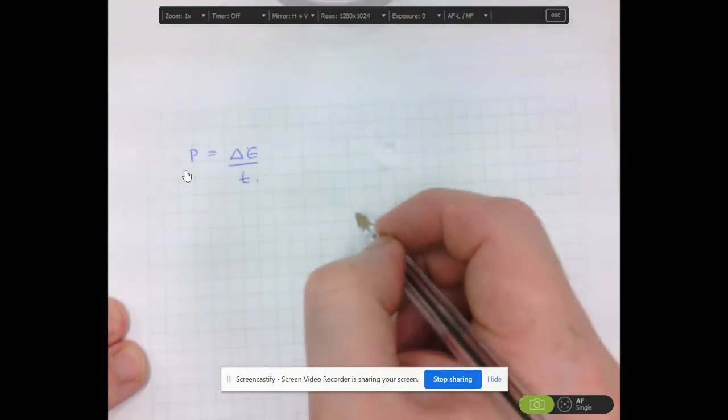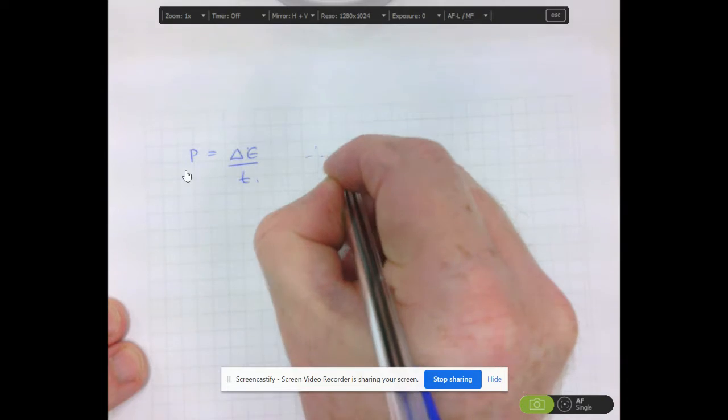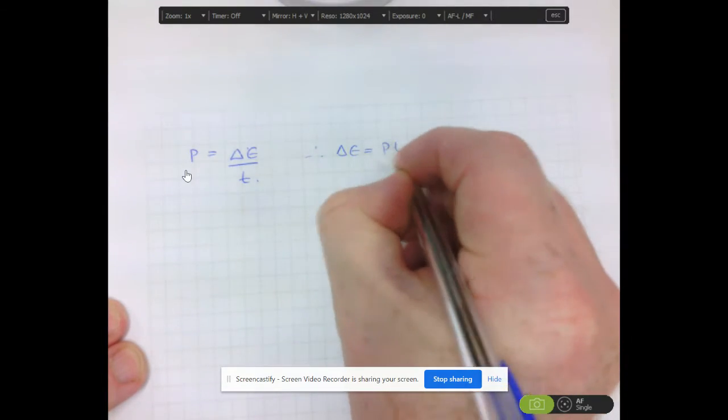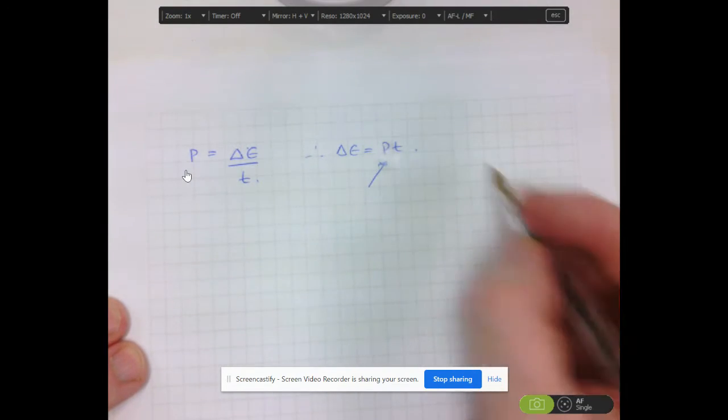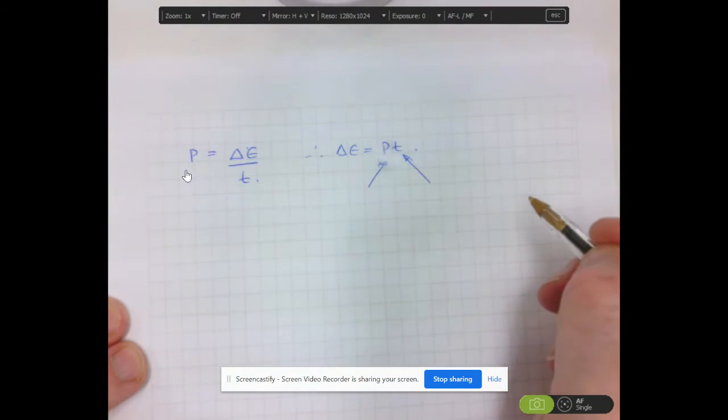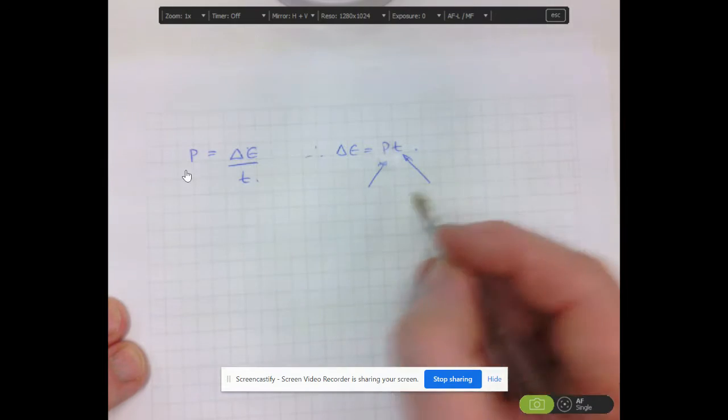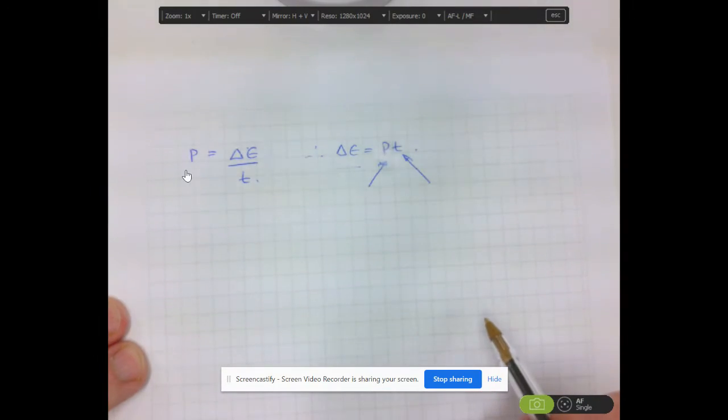If we multiply the time up there, that means the change of energy is given by PT. So if I know the power that is generated by a system and the time that power generation is occurring, I can work out the amount of transformation of energy.